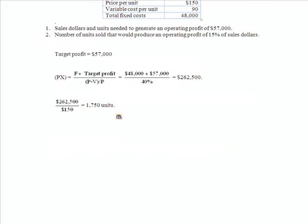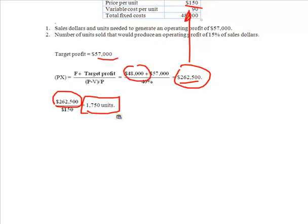If I know my price per unit is $150 and I know how much I need to generate, it's simply target profit plus fixed costs divided by contribution margin, this number right here, divided by that $150 price per unit. I have to produce 1,750 units to generate $262,500, which will cover my fixed costs of $48,000 and give me my target profit of $57,000.